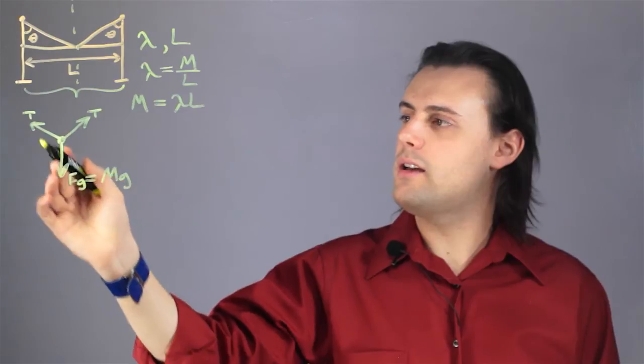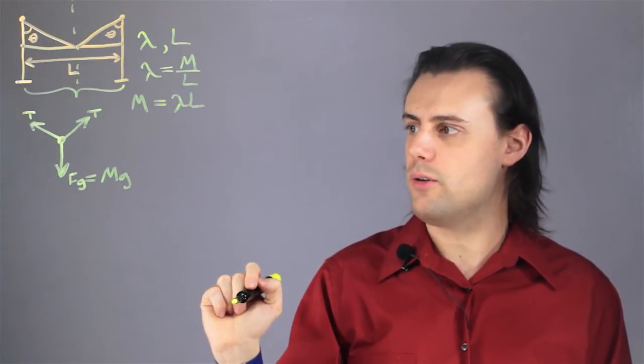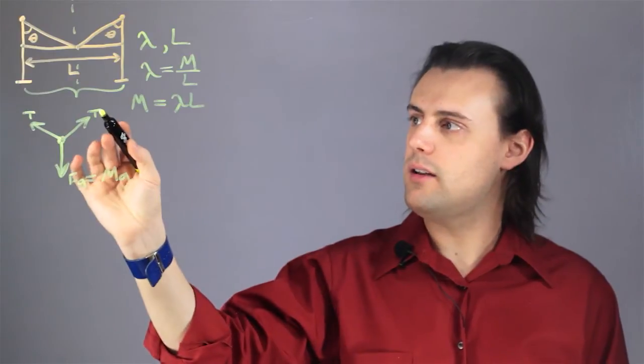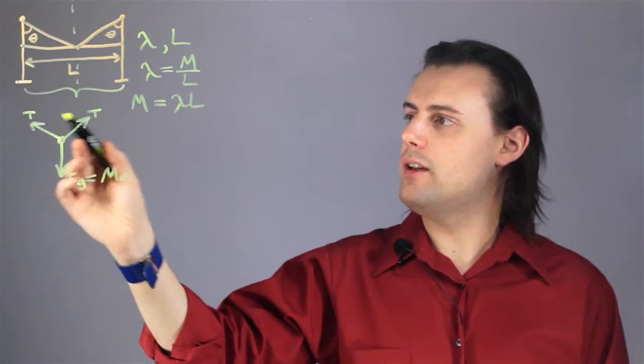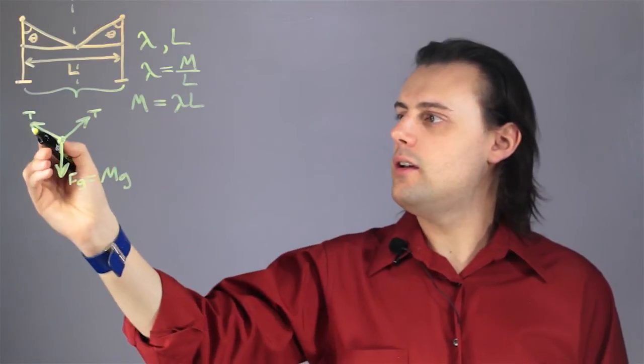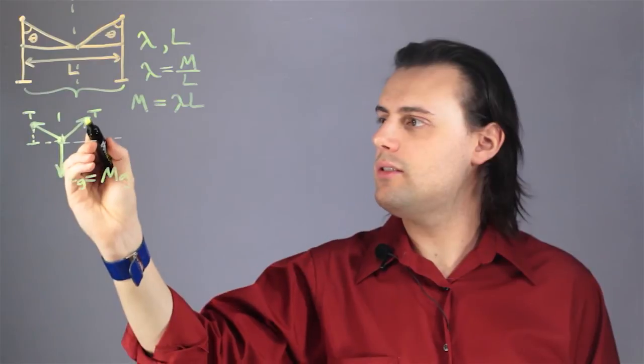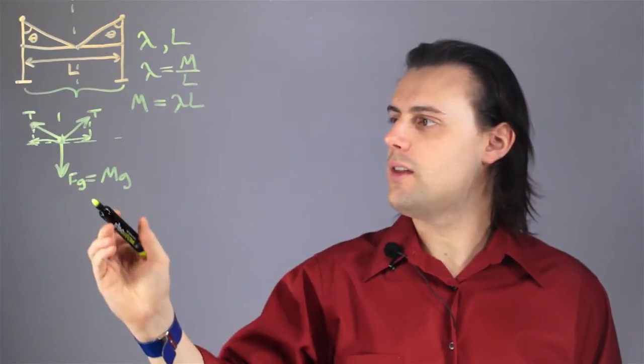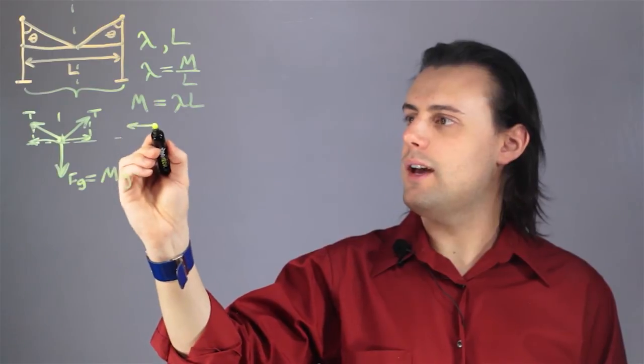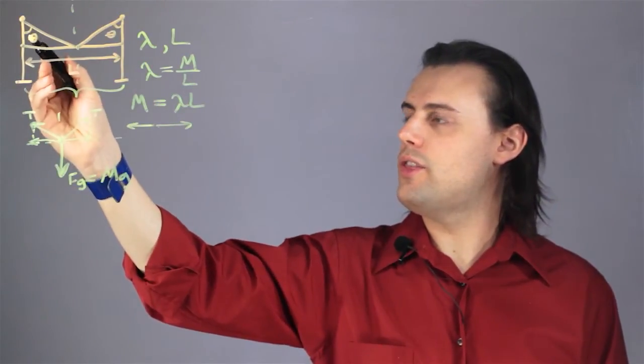I want to break this free body diagram into the horizontal and vertical components of all the forces to determine algebraically what this tension is. So if we look at the horizontal, if I draw a little projection along the x-axis for both of these tension vectors, I notice that they'll cancel each other out, and there's this angle theta here.